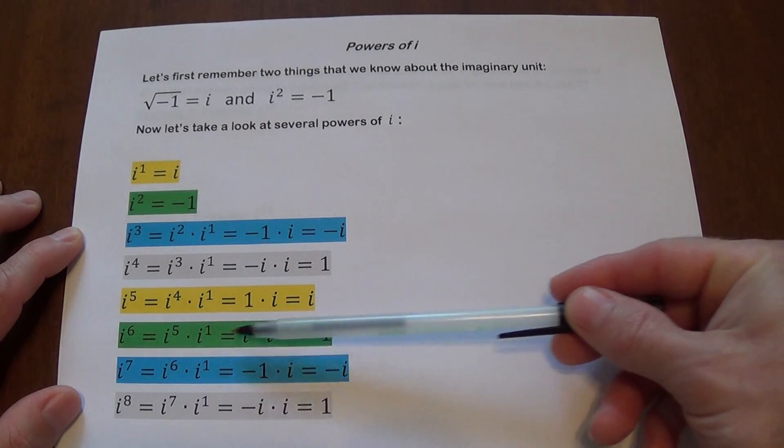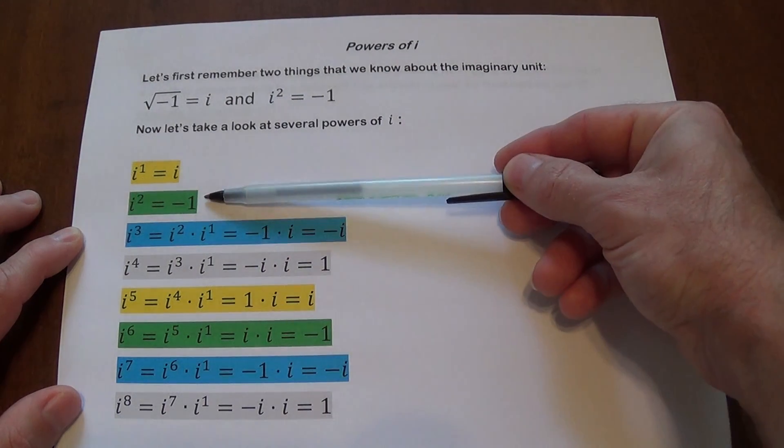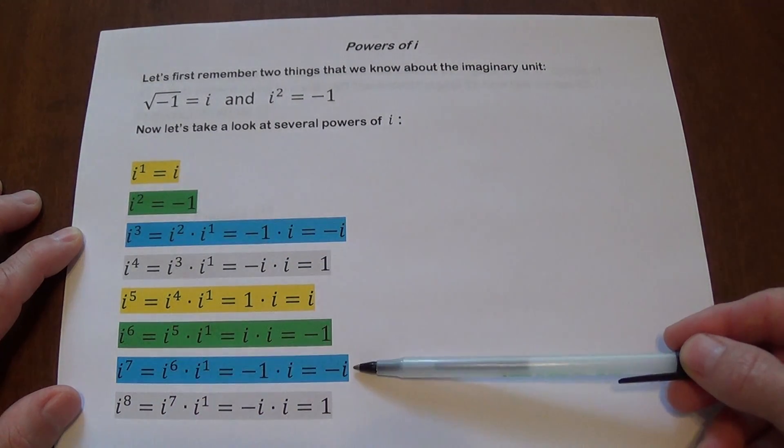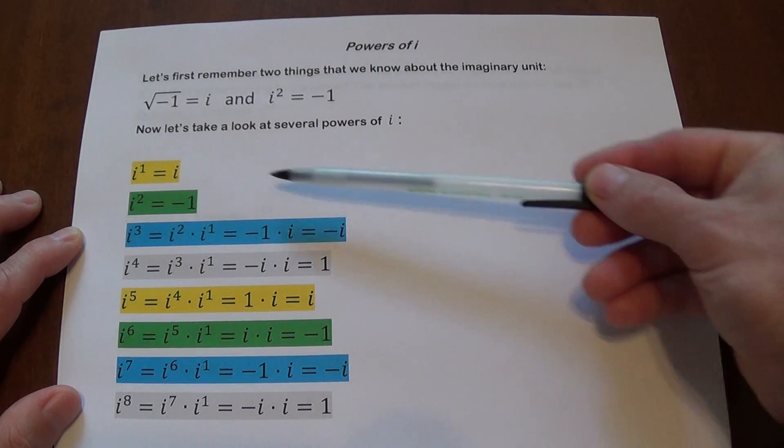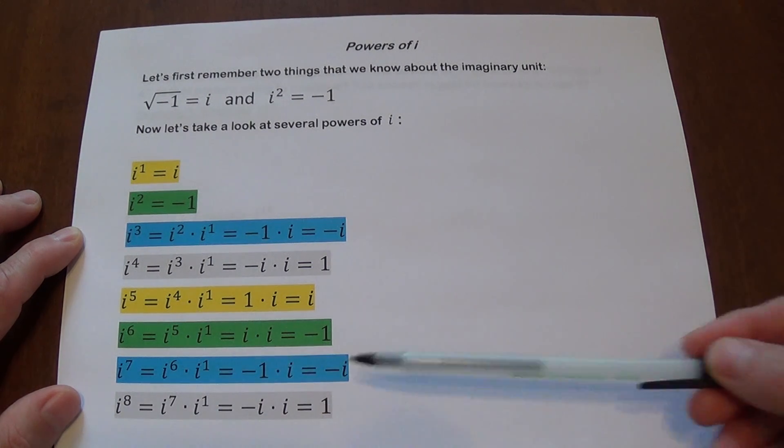i to the sixth, you can break it down like this. You are going to get negative one. Matches that. i to the seventh, after all this work, you're going to get negative i. Matches this. That's why I have this color matching. i to the eighth is going to get one.